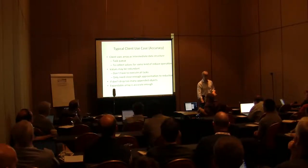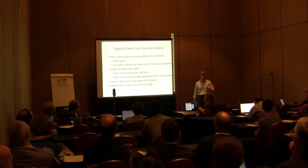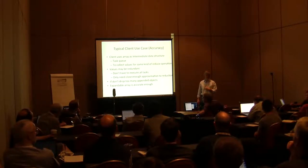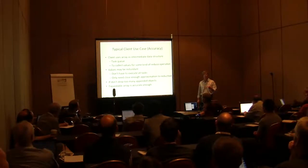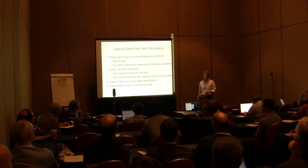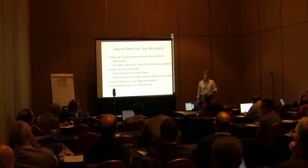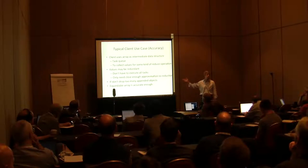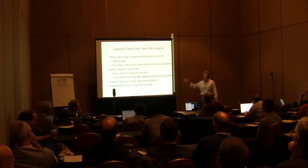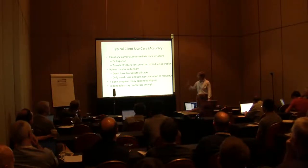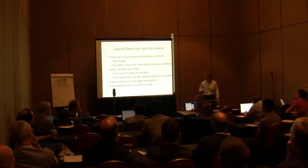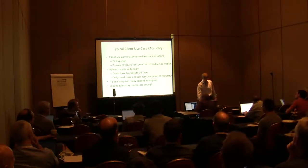What about accuracy? If the client uses an intermediate data structure like a task queue to collect values for a reduce operation, in many cases the values are redundant — research shows you don't have to execute all the tasks and you'll be fine. So if you happen to lose stuff out of the task queue, it's not a problem. Or if you only need a close enough approximation to the reduction, many programs with this property are okay. If you don't drop too many dependent objects, the expandable array is accurate enough.